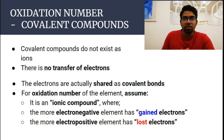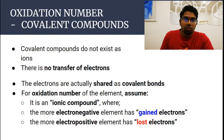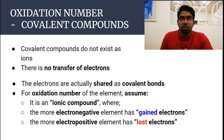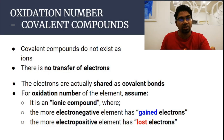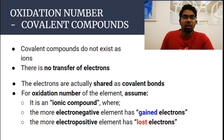We saw for ionic compounds — if you haven't seen the video on oxidation numbers of ionic compounds, please click the link in the corner of the video. For ionic compounds, when we look at monoatomic ions, the oxidation number of the monoatomic ion will be its charge, written in reverse. For example, the charge of sodium is 1+, so the oxidation number of the sodium ion will be plus one.